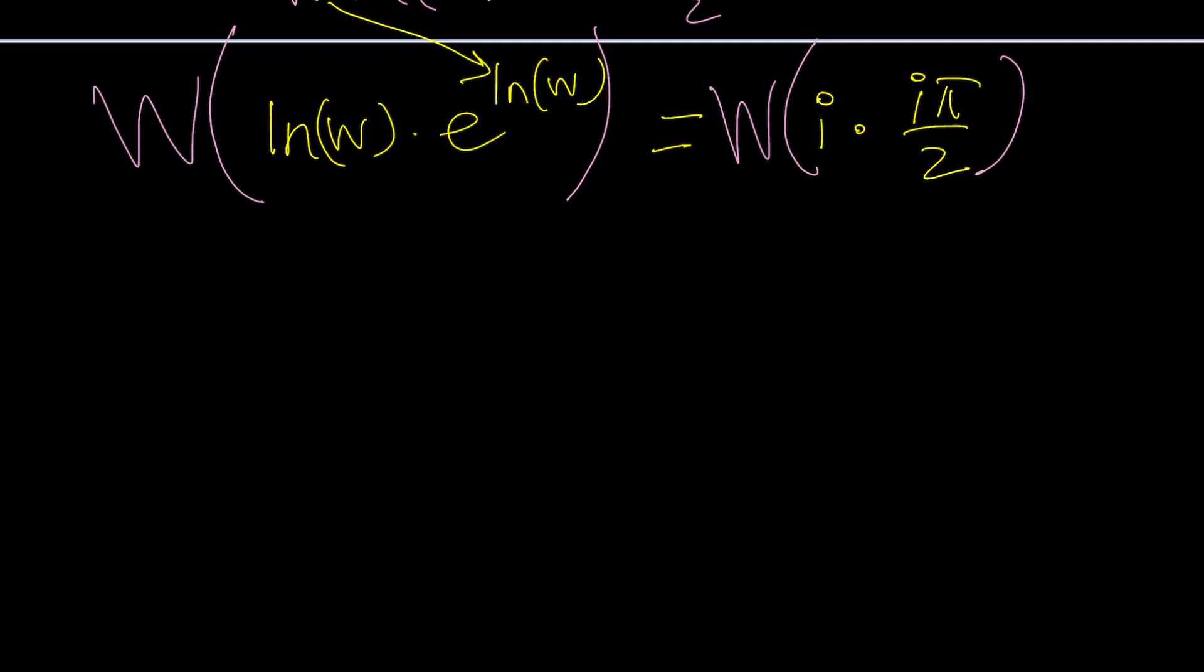Here's the thing. The argument for i is iπ over 2. So, I can write i as e to the power iπ over 2, like this. Nice. And then, when I apply Lambert, it's going to be iπ over 2. Nice.